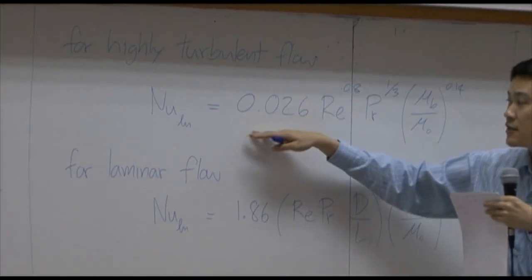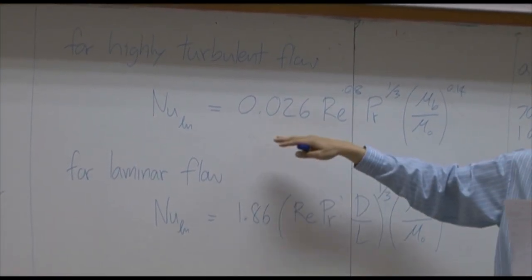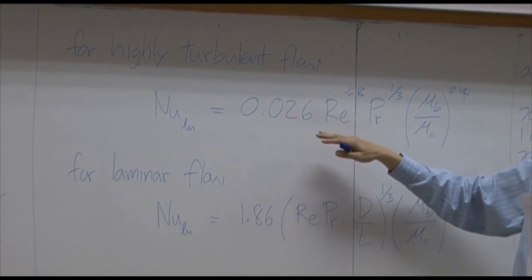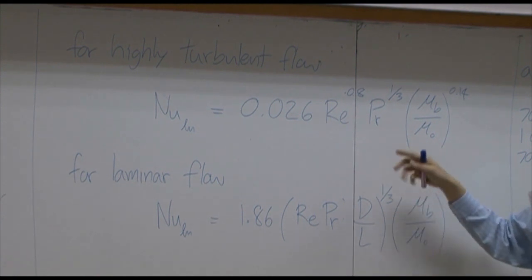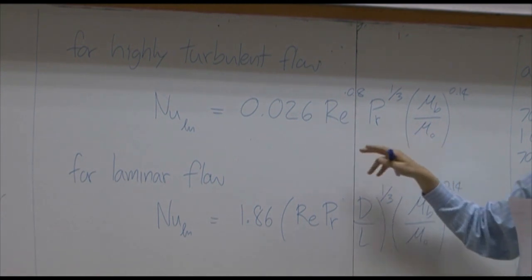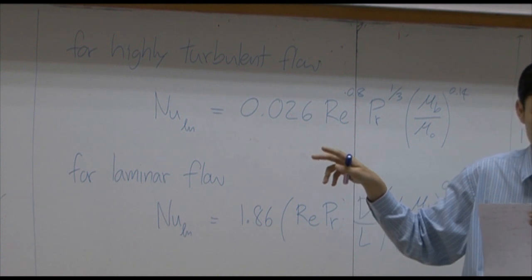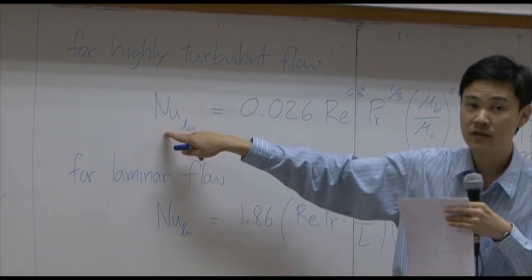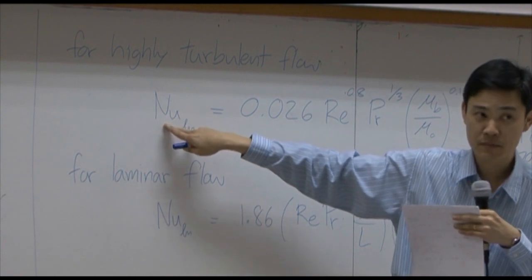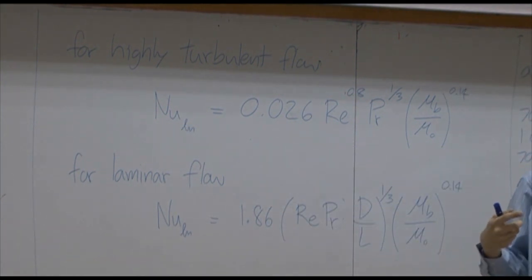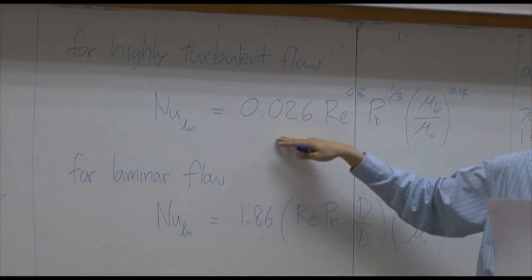For turbulent flow, this is a very famous empirical equation that you will use again in unit operation 3. You use it to calculate the heat transfer coefficient, because Nusselt number is a function of the heat transfer coefficient. Whenever you want to calculate heat transfer in a circular pipe, usually we pick up this equation.